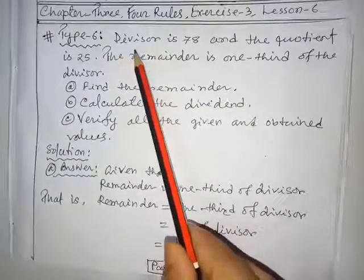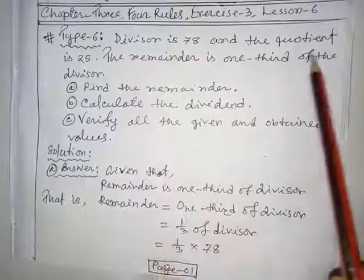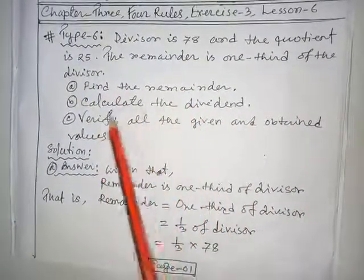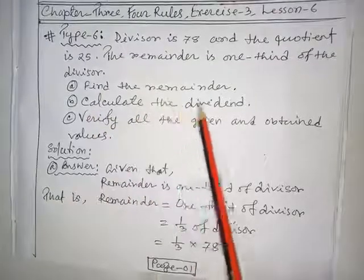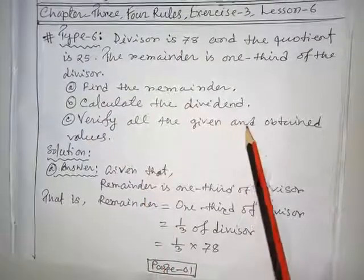Type 6 creative type questions. Divisor is 78 and the quotient is 25. The remainder is one-third of the divisor. Question A: find the remainder. Question B: calculate the dividend. Question C: verify all the given and obtained values.